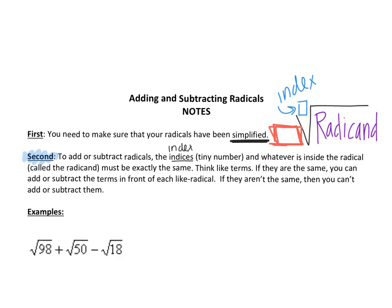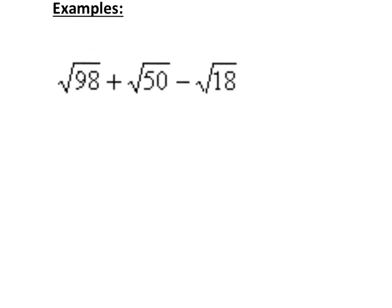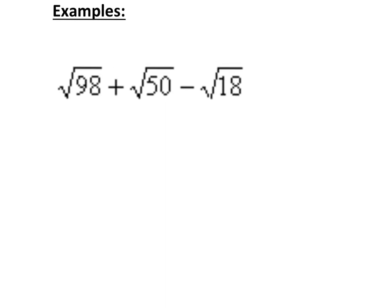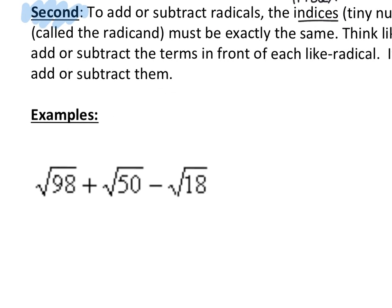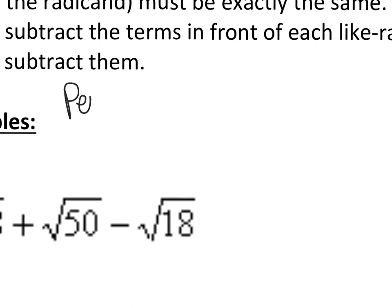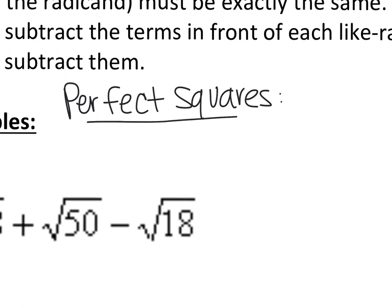Let's go ahead and look at this first problem. I'm asking you to add and subtract the square root of 98 plus the square root of 50 minus the square root of 18. The first thing I can tell is that I can simplify them — I have to simplify them, otherwise that right there is just my answer. So I'm going to go into the calculator, go into y equals, type in 98 divided by x, and look at the table. I'm going to look at the x and y values to see if I get any that are perfect squares. Our perfect squares are the numbers 4, 9, 16, 25, 36, 49, 64, 81, etc.